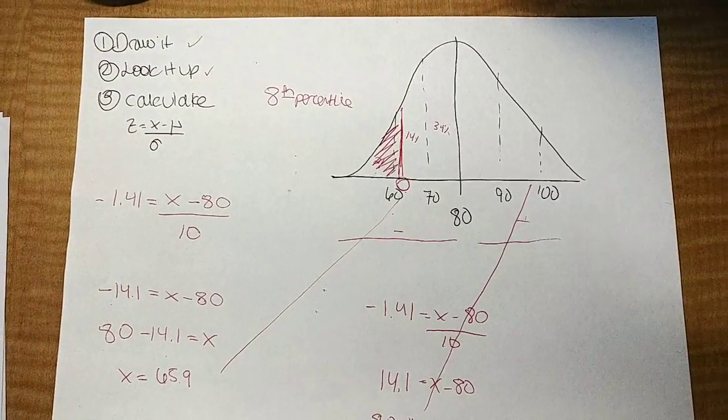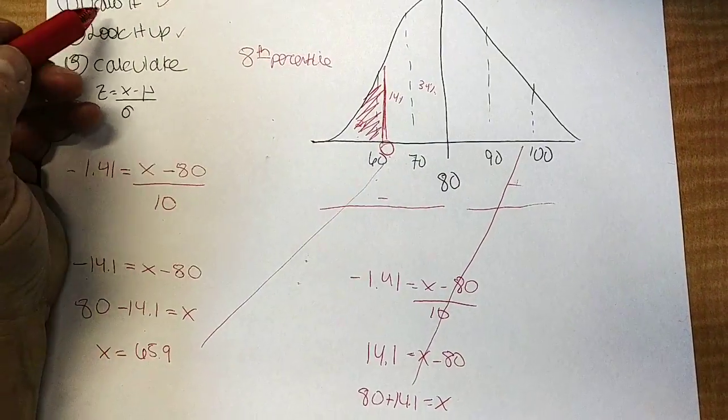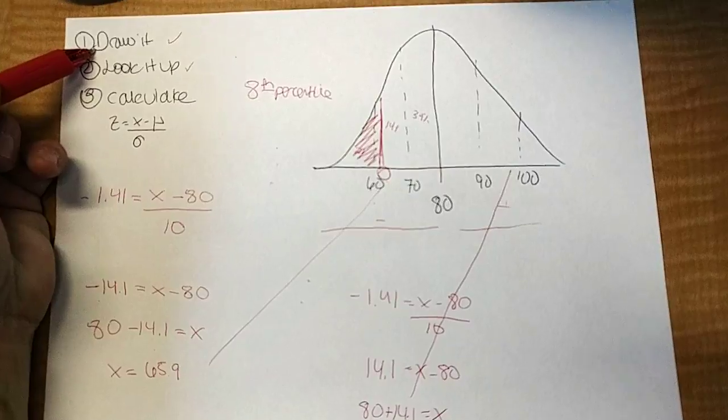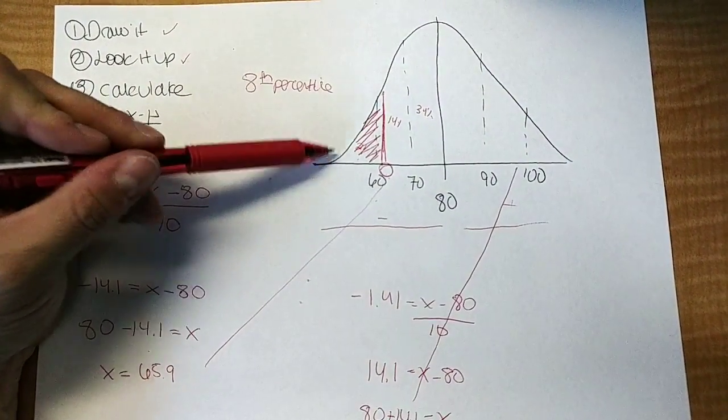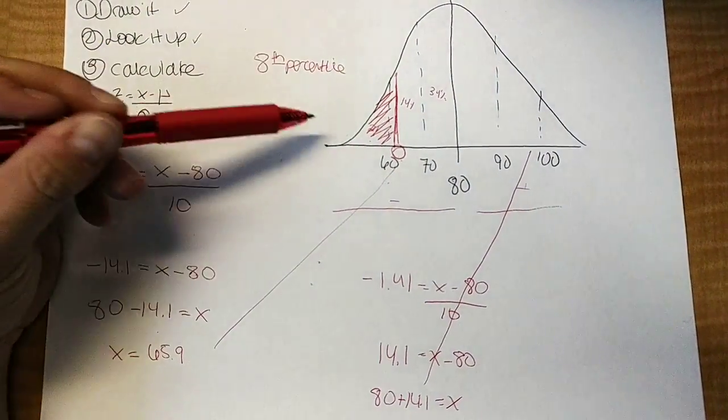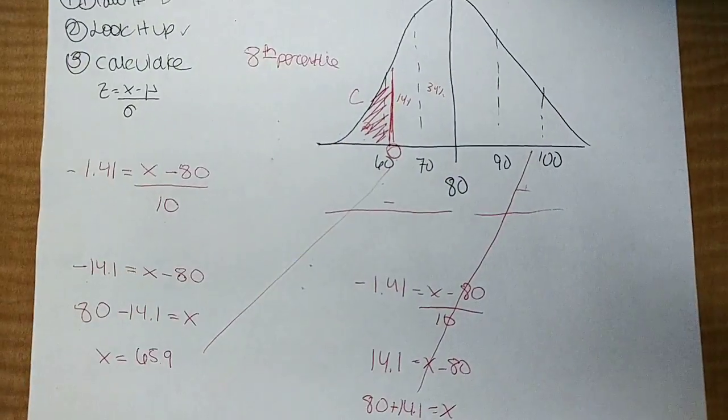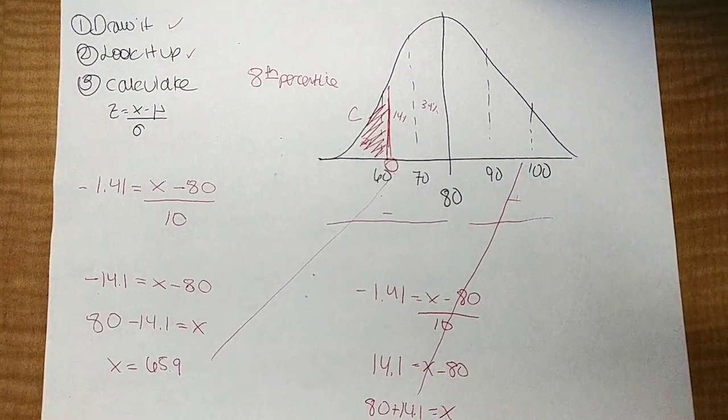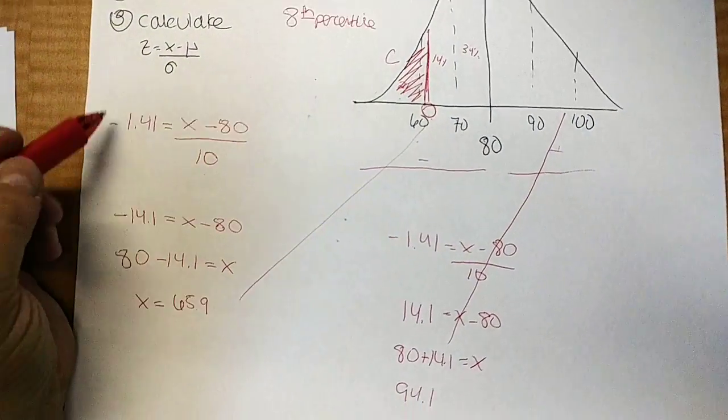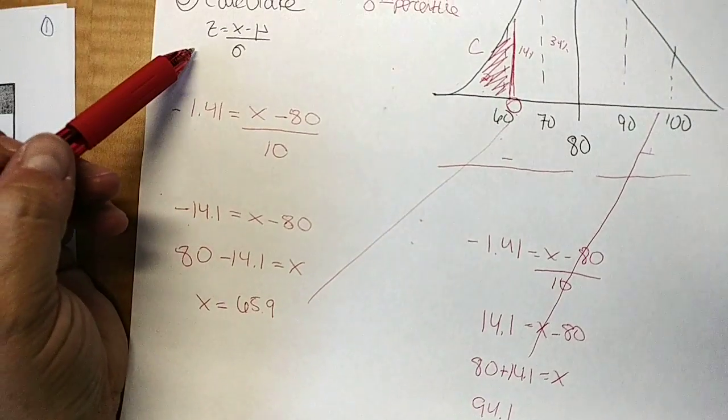So what we've done with this example is we went backwards. We drew it appropriately according to the story, the lower 8%. I looked it up in the table. In this case, this looks like the C column. So I looked up an 8% in the C column to find out which Z score was associated with it. And then I put it back in the formula.